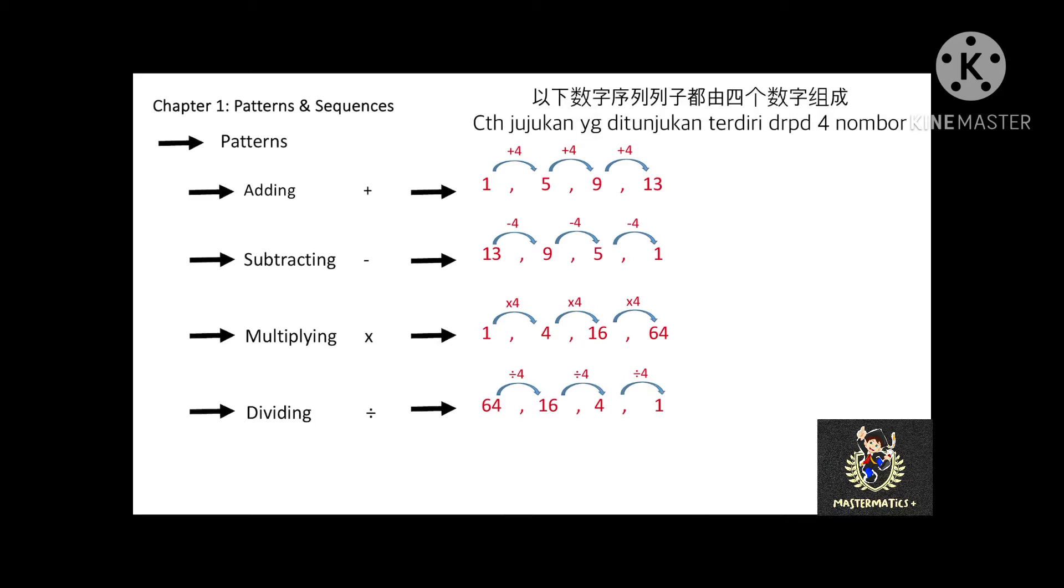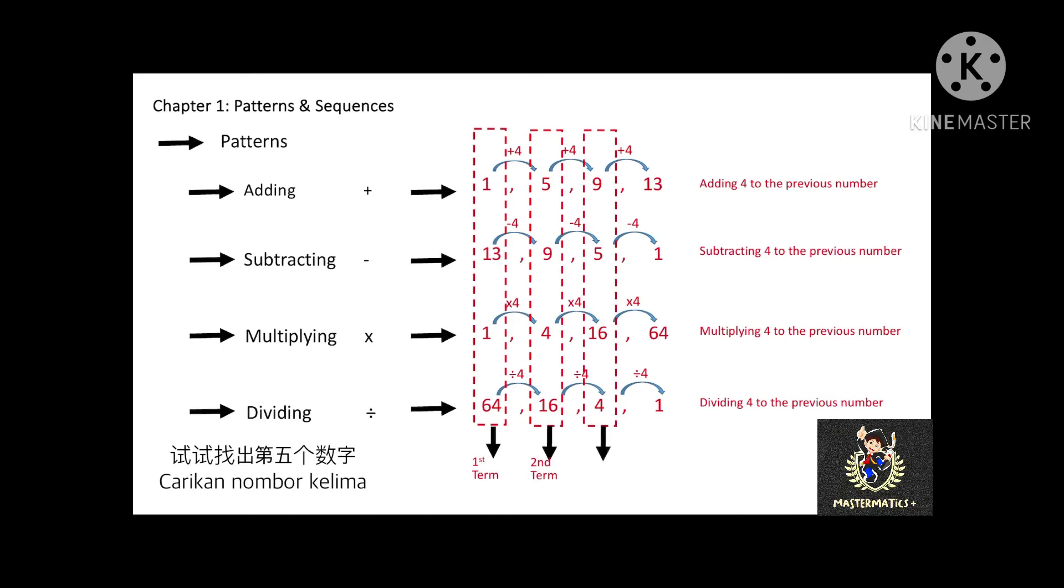Of all the examples shown, there are 4 terms in the set of numbers. Some may have 5, 6, or 7 terms, or even more. The first column is the first term, second column is the second term, third column is the third term, the last column is the fourth term, and so on. Now, can you identify the fifth term for all the sets of numbers?